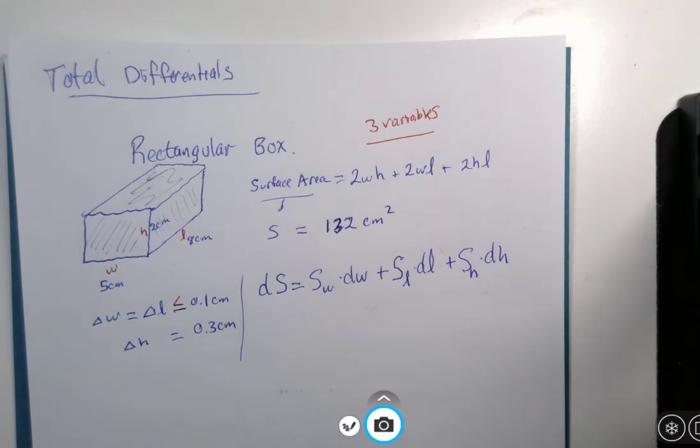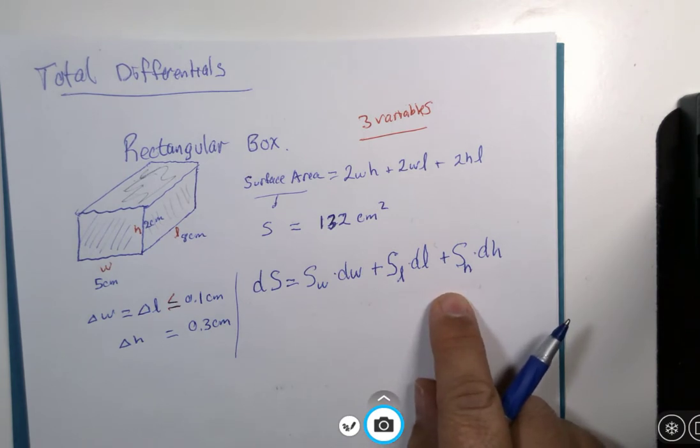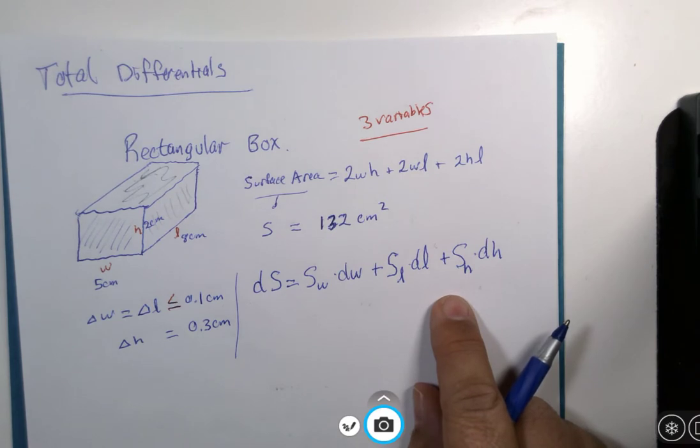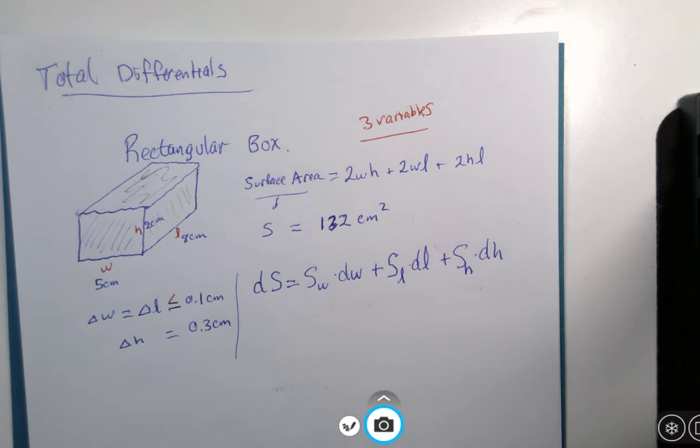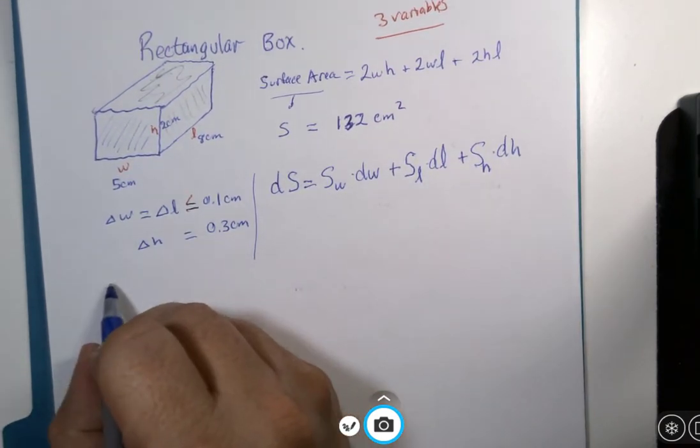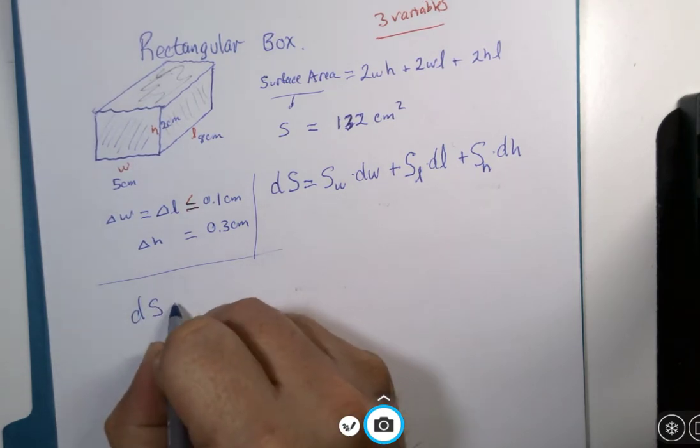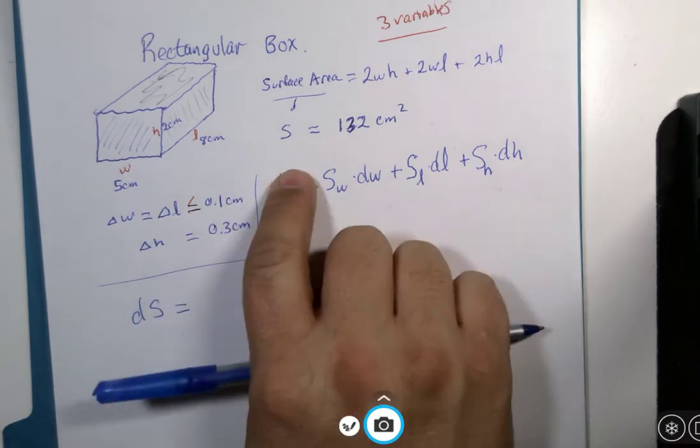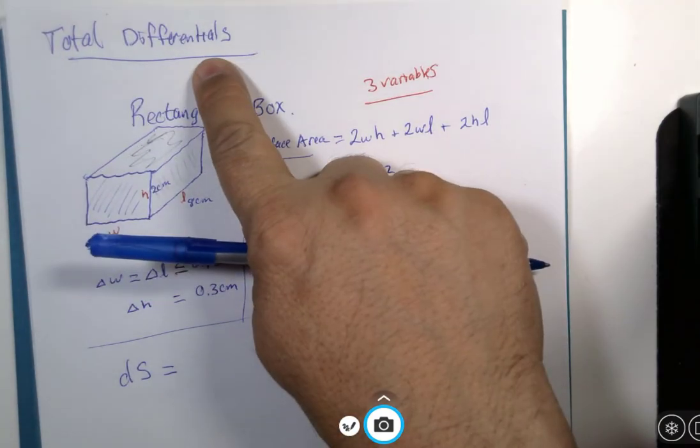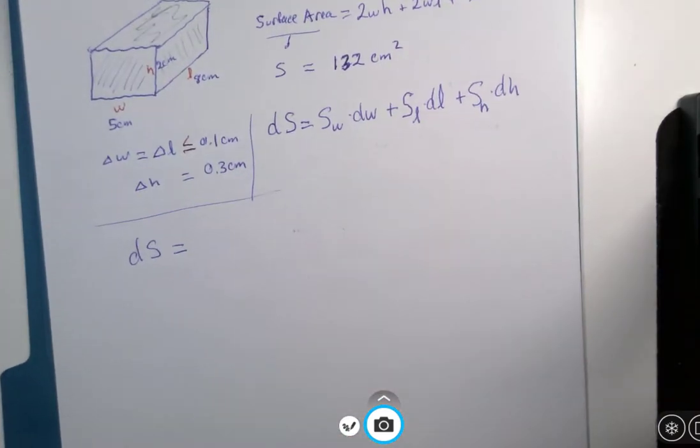Now what I'm going to do is I'm going to show this and then give you a task to do some computing on your own and then we can meet back up again and look at an answer. So let's do this calculation here. DS is equal to, so now this is the total differential DS.